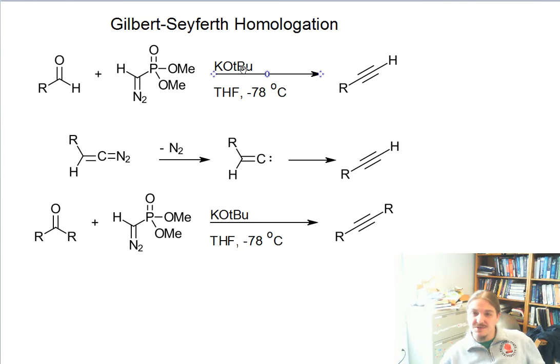Because the base we're using, potassium tert-butoxide, is weaker than the acetylene anion, we don't have to worry about deprotonation. We don't need to worry about aqueous workup. And like the Corey-Fuchs reaction, if we started with a ketone, we end up with an internal alkyne.